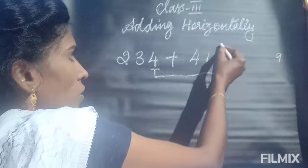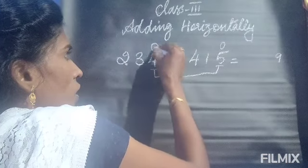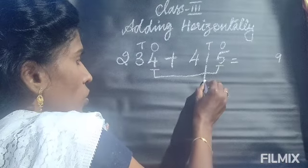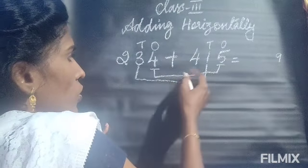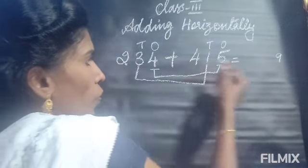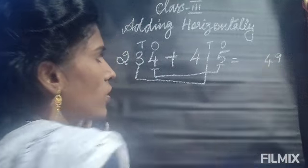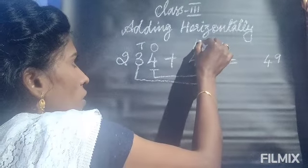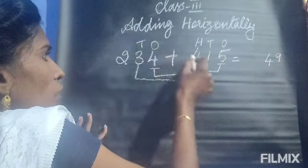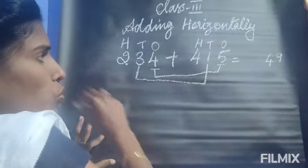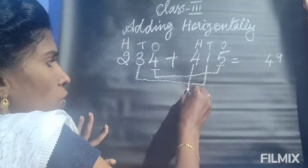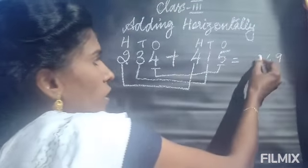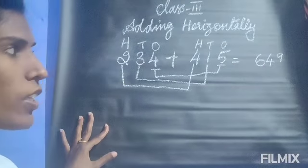Again, the number in the tens place — that is 1 and 3. So 1 plus 3 is 4. Write 4 in the tens place. Next, the number in the hundreds place — here it is 4 and here it is 2. So 4 plus 2, we get 6. So the answer is 649.